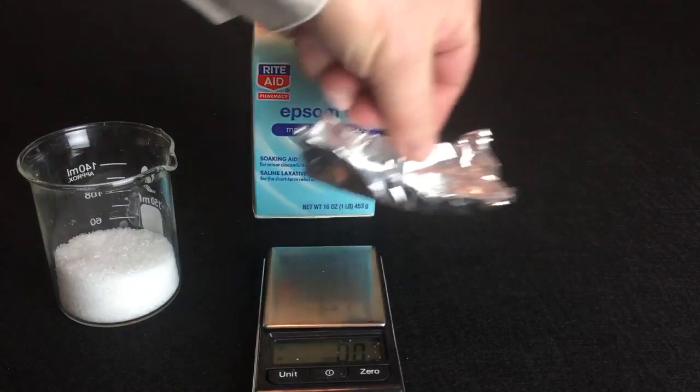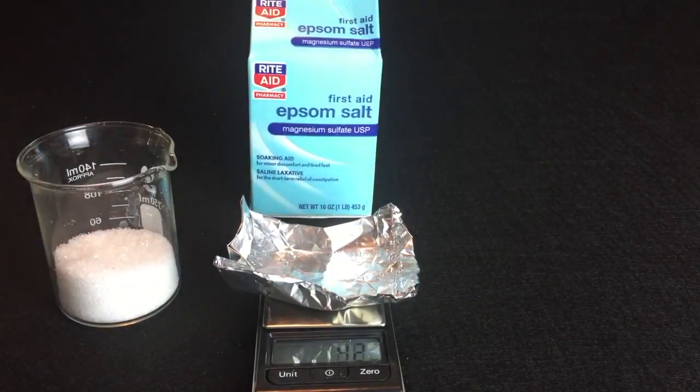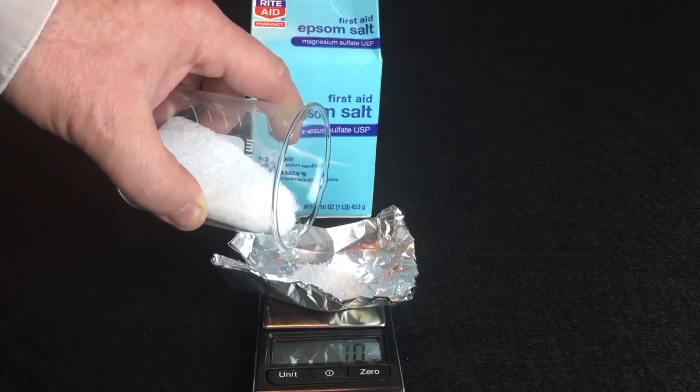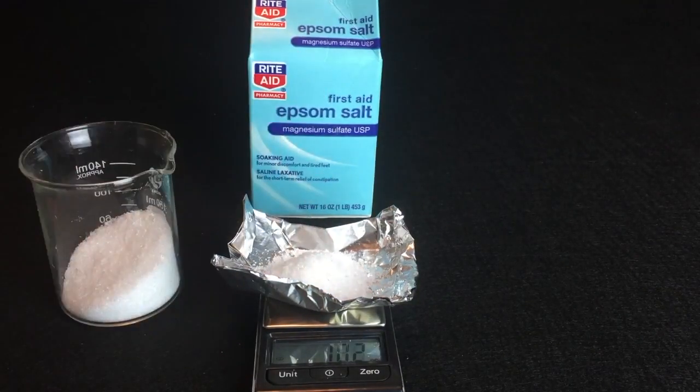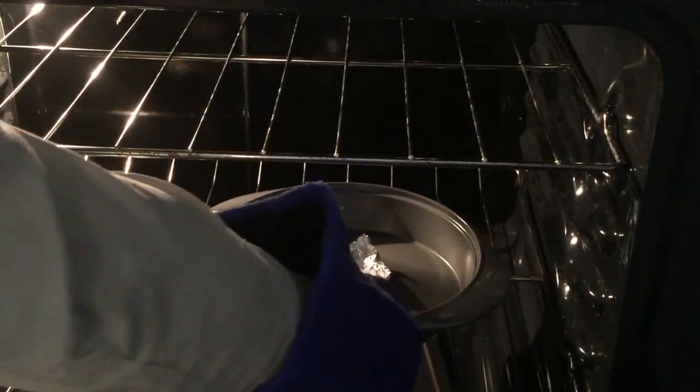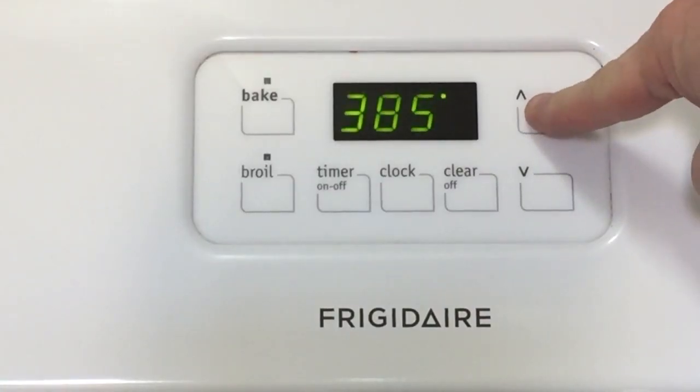First, fold a strip of aluminum foil into a makeshift tray, set it on your digital scale, and zero the scale. Then pour about 10 grams of fresh Epsom salts and record the mass. Next, bake it at 480 degrees Fahrenheit or 250 degrees Celsius for an hour or so until it's completely dry.